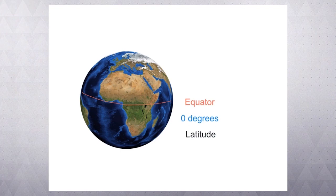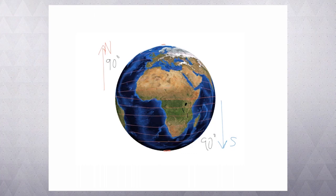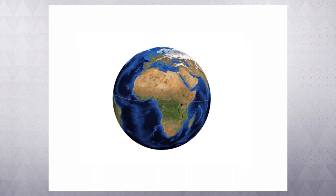Everything above this line is 0 to 90 degrees north and everything below the line is 0 to 90 degrees south. So if you're finding a number, you need to look for the N or the S and it will be between 0 and 90 degrees. They're our lines of latitude. Lat is flat is the way I like to remind my students.